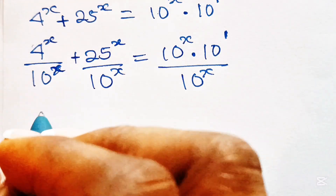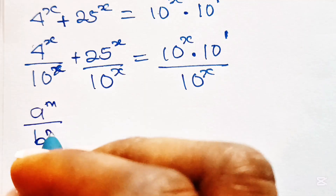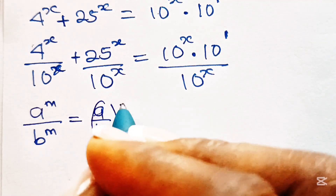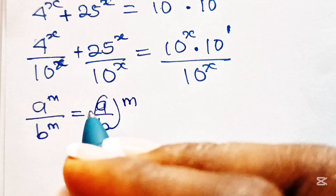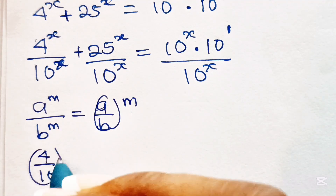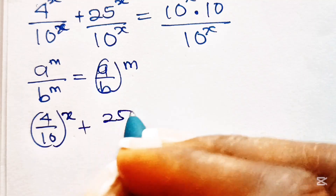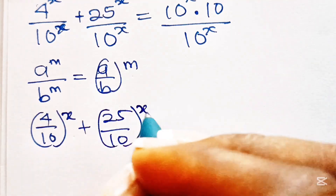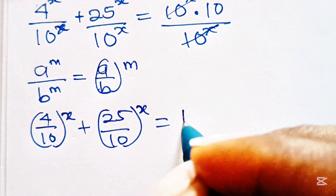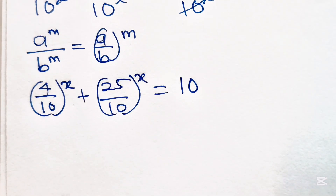Now, when you have a to the power of m divided by b to the power of m, this is equal to a divided by b raised to the power of m. Therefore we can write this as 4 divided by 10 raised to the power of x, plus 25 divided by 10 raised to the power of x, is equal to — this will divide itself and we have 10 to the power of 1, which is 10.